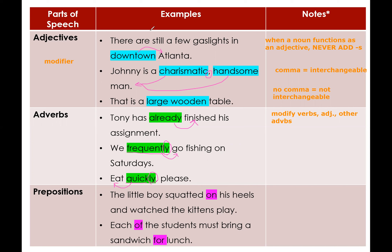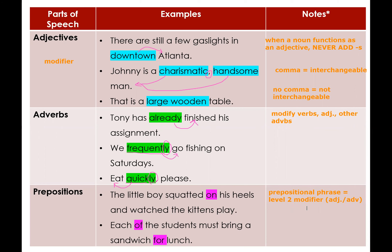Now we're moving on to prepositions. Prepositions indicate a prepositional phrase, which is a level two modifier — the same function as an adverb or adjective. You can always cross out prepositional phrases to isolate your main idea. In the example, 'The little boy squatted on his heels and watched the kittens play,' 'on' is the preposition; cross out 'on his heels,' where 'heels' is the object of the preposition. You still have a complete sentence: subject 'boy,' verbs 'squatted and watched,' object 'the kittens.'